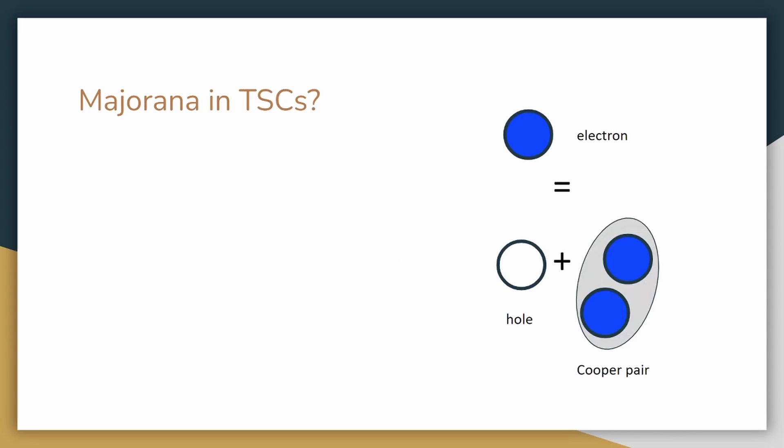So how exactly are superconductors a candidate to finding these particles? Let us go back to the Bogoliubov quasiparticles. The equations that define these particles look quite similar to the equations that define the Majorana particle. If the particles are adjusted such that U and V are conjugates of each other,